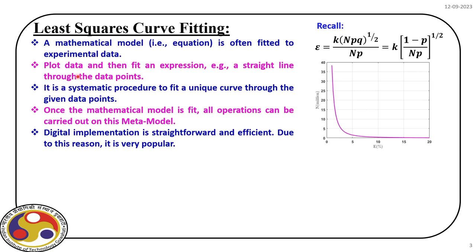The metamodel is a mathematical model — we fit an equation that represents the surface, and we fit it to experimental data. We carry out some experiments, obtain observations, and then fit an expression — maybe a straight line or a non-linear function. In this systematic procedure, we fit a unique curve through the data points. The type of equation we fit depends on the nature of the data, as we will see.